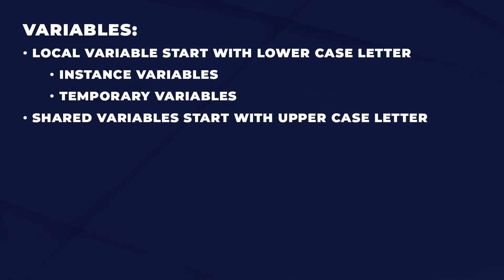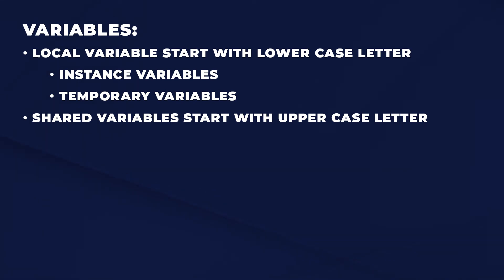Variables. There are multiple types of variables, but keeping things simple: local variables start with a lowercase letter, and shared variables start with an uppercase letter. The local variables you'll see most frequently are instance variables. Instance variables are local to the object — any method in that object can refer to that instance variable — and temporary variables are available only to that method. A method is the equivalent of a function or procedure.